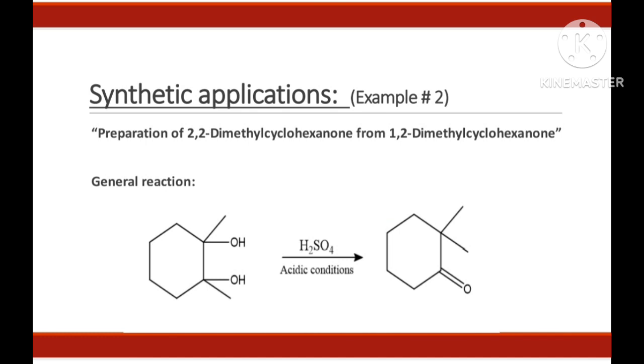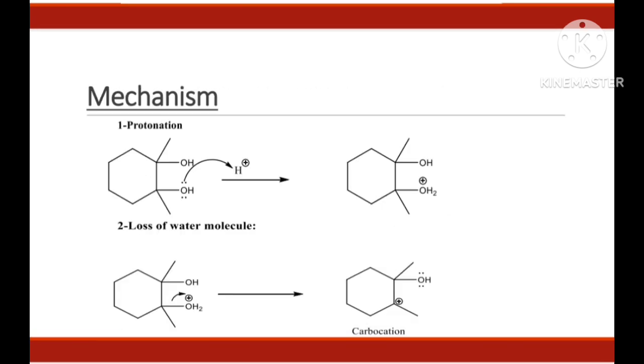Now, let's discuss example number 2 which is preparation of 2,2-dimethylcyclohexanone. Let's see its general reaction. Here, a vicinal diol which is symmetrical is converted into pinacolone which is 2,2-dimethylcyclohexanone in acidic conditions and mostly we use 25% sulfuric acid. Then comes its mechanism.